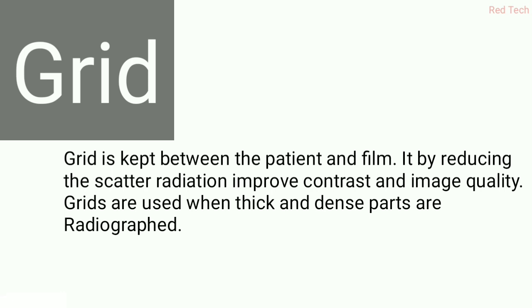Next is the grid. The grid is kept between the patient and the film. It is used to reduce scatter radiation and improve contrast and image quality. Grids are used when thick and dense body parts are radiographed, such as the abdomen, femur bone, or spine. The grid absorbs scatter radiation that comes out during x-ray exposure.